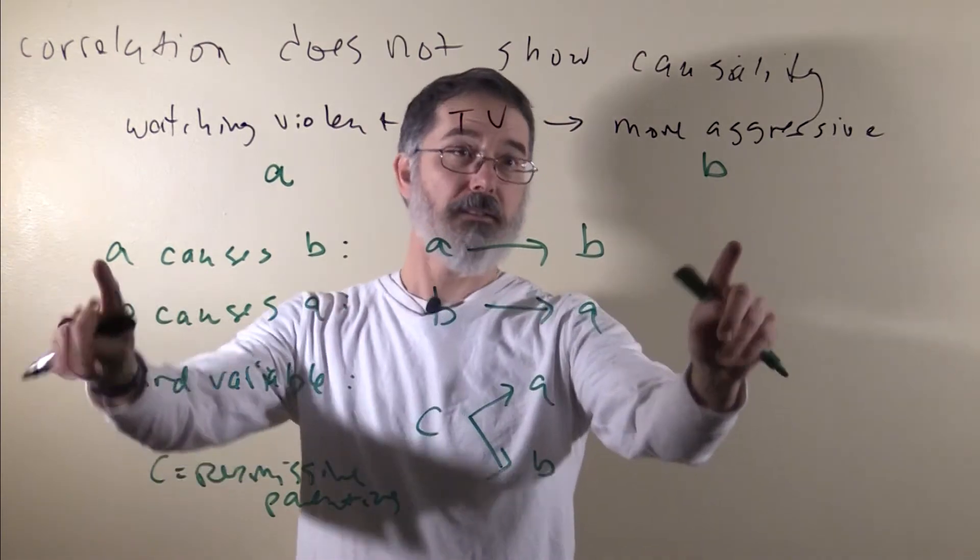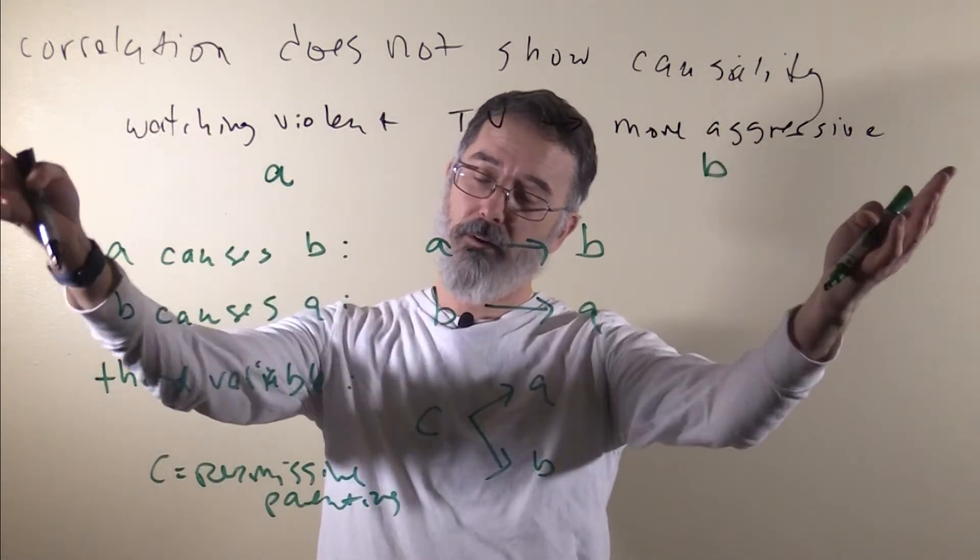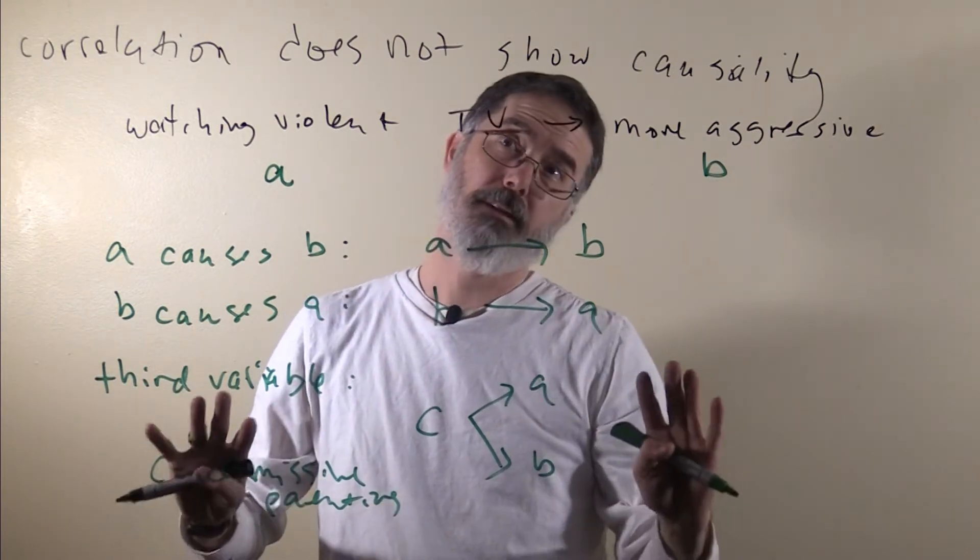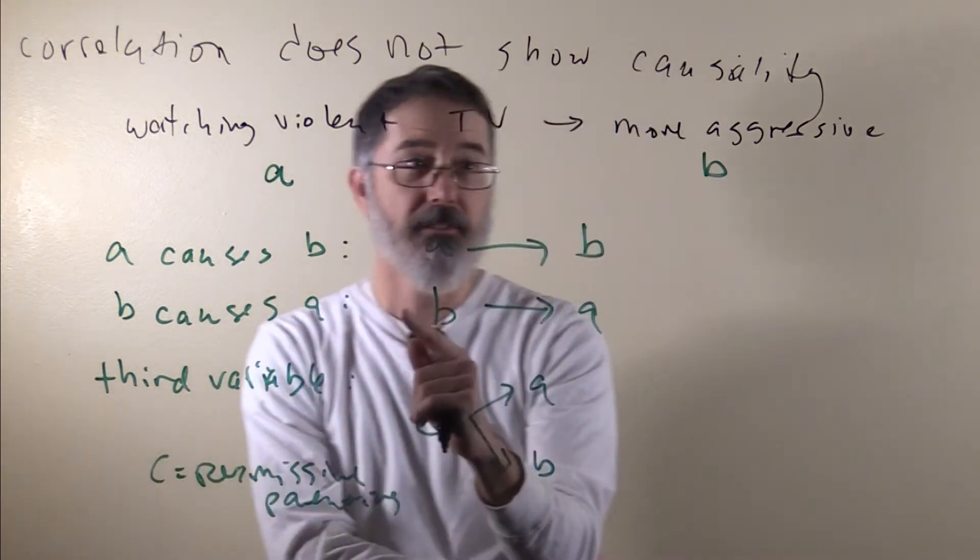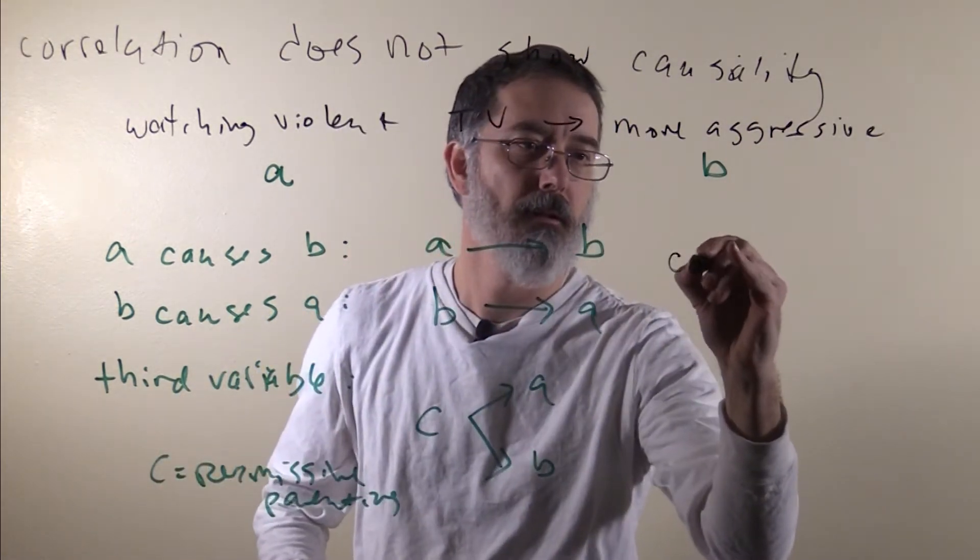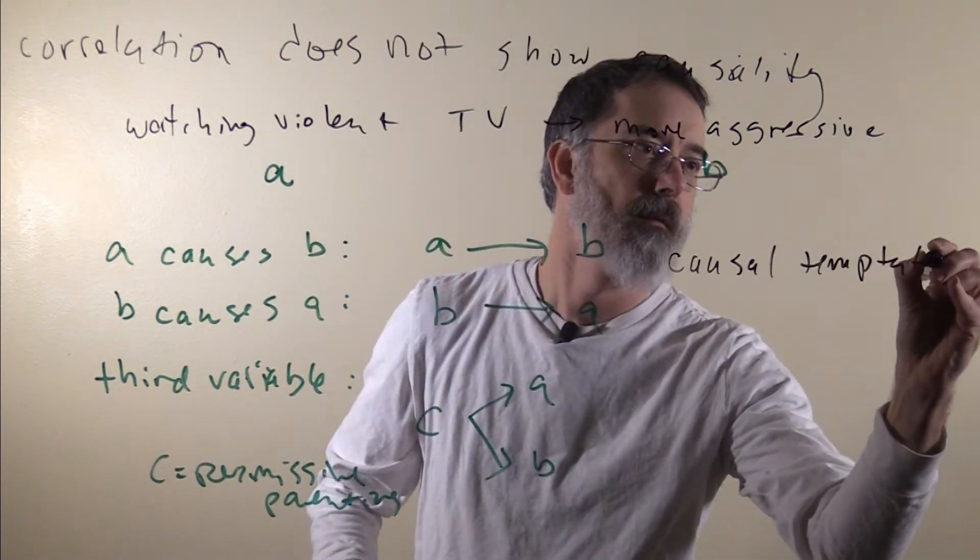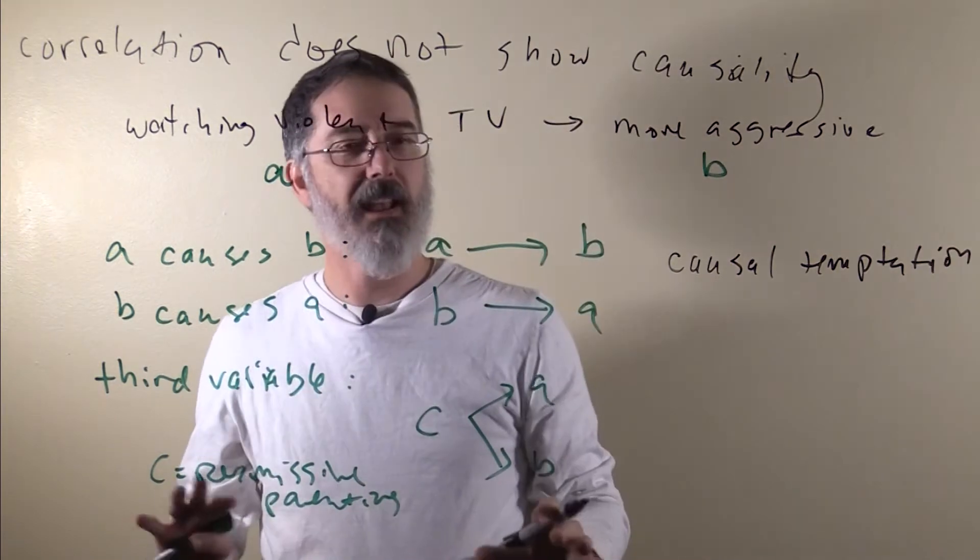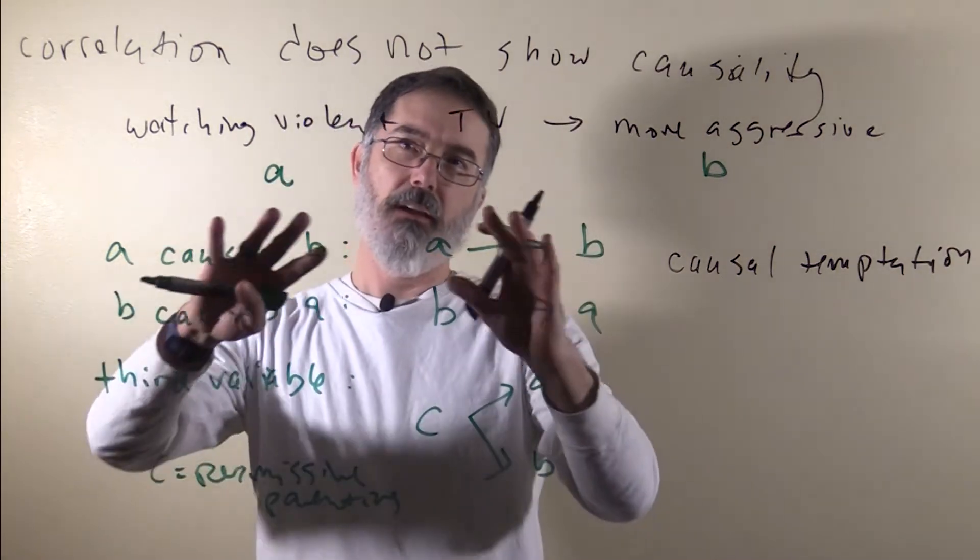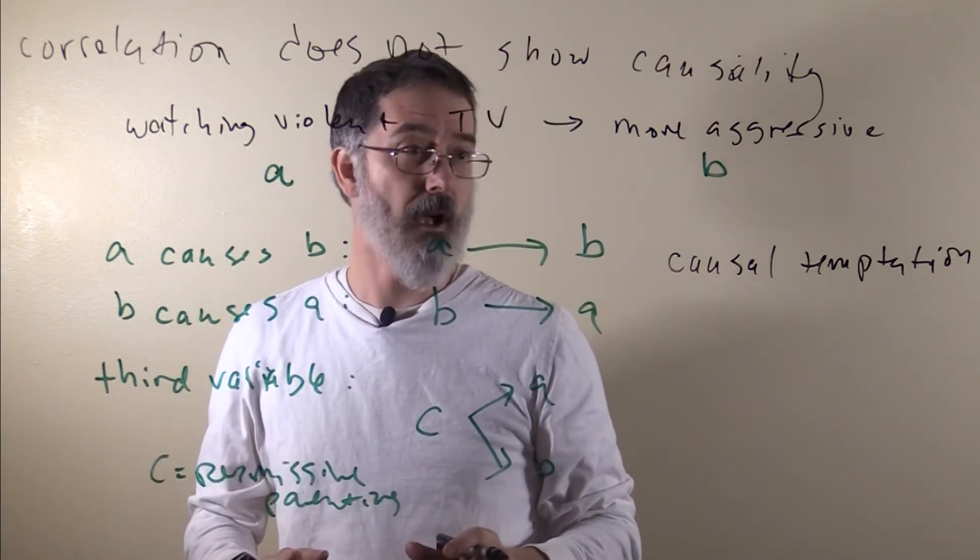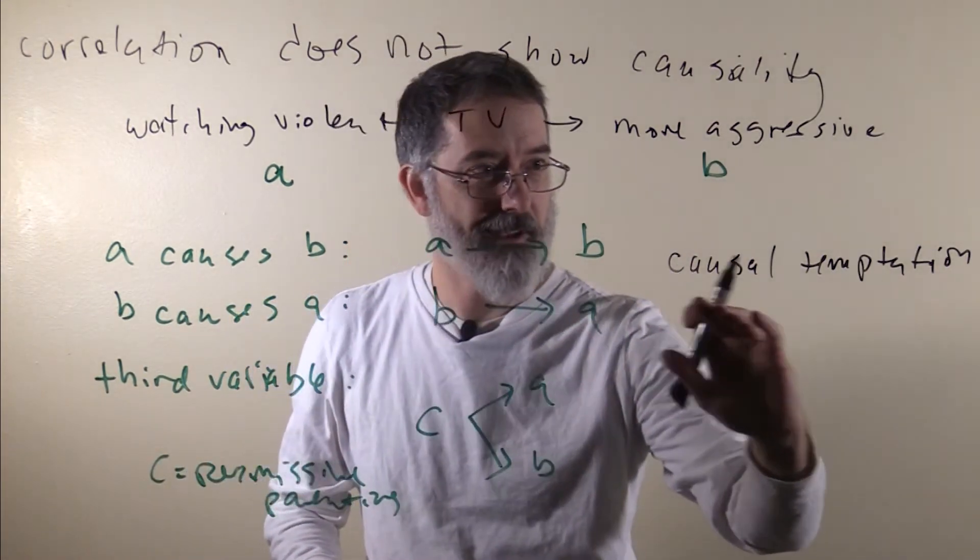So with one observed positive correlation between two variables, you have no idea what is causing what. And this is a common issue with correlations. There is even a term for people's natural inclination to see a positive or negative correlation, to see a correlation and infer causation. Somebody has called it the causal temptation.